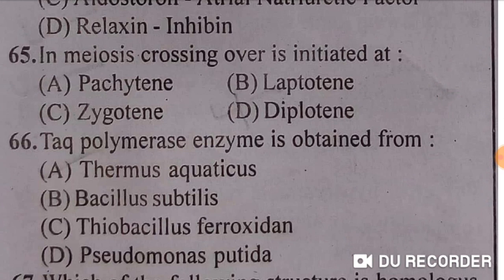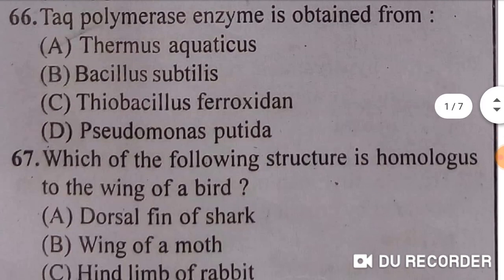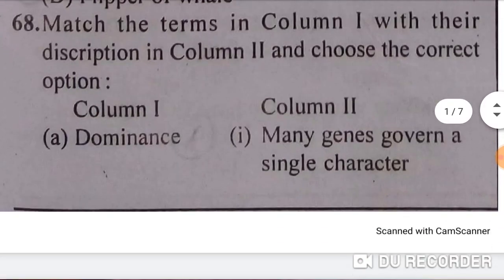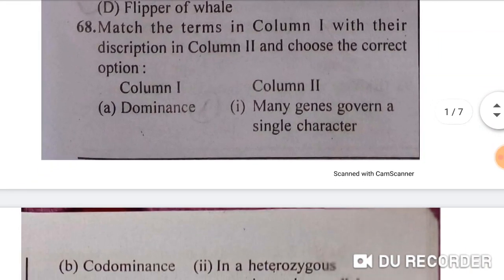Taq polymerase enzyme is obtained from Thermus aquaticus — option A is correct. Next: which of the following structures is homologous to the wing of a bird? The flipper of a whale is homologous to the wing of a bird — option D is the correct answer.